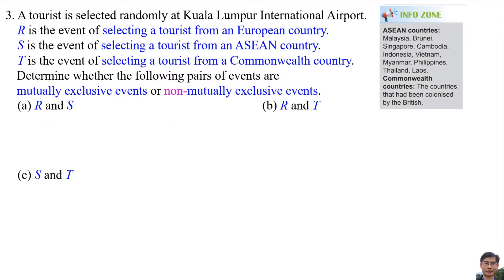Question 3: A tourist is selected randomly at Kuala Lumpur International Airport. R is the event of selecting a tourist from a European country, S is the event of selecting a tourist from an Asian country, and T is the event of selecting a tourist from a Commonwealth country. Determine whether the following pairs of events are mutually exclusive or non-mutually exclusive events.